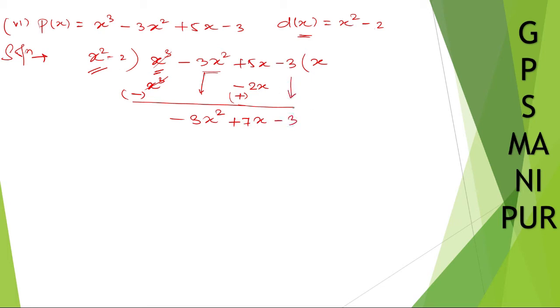So now x square into how much is minus 3x square. So x square minus 3. So it will be minus 3x square. Minus 2 into minus 3. Minus into minus plus 3 to the 6. So it will be plus 6. We cannot write down here. So write down plus 6 here. Change the sign. Minus will become plus. Plus will become minus. These two will get cancel. Take 7x down here. Minus 6 minus 3. It will be minus 9.